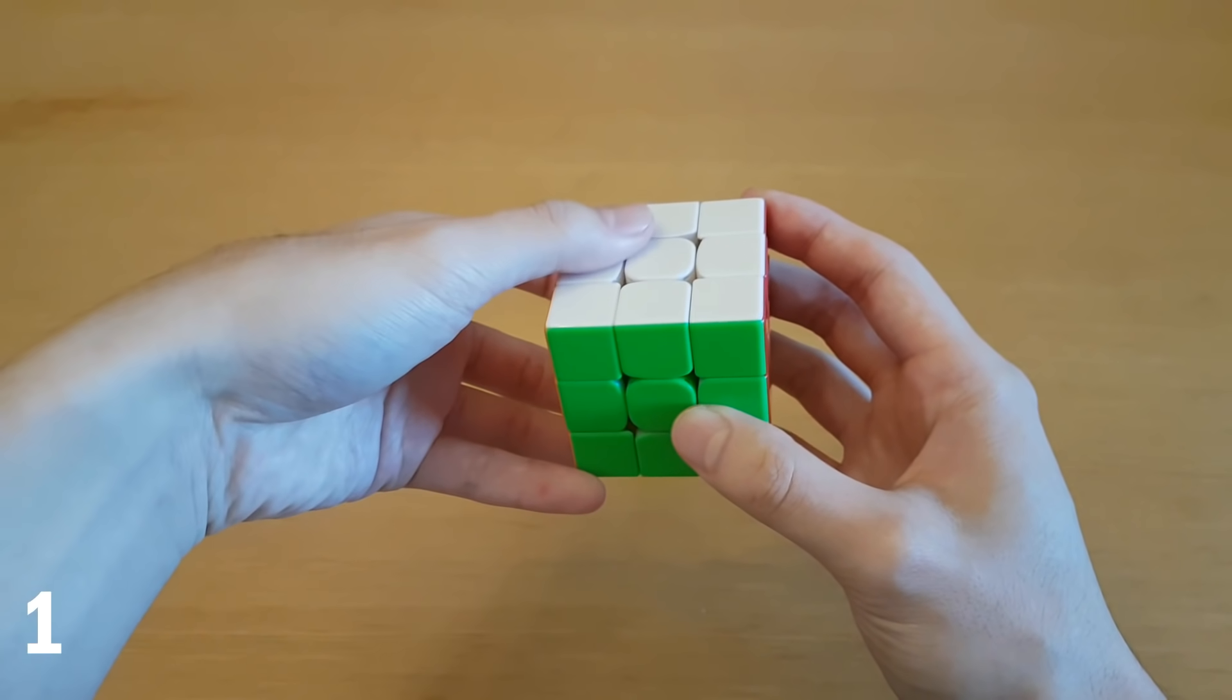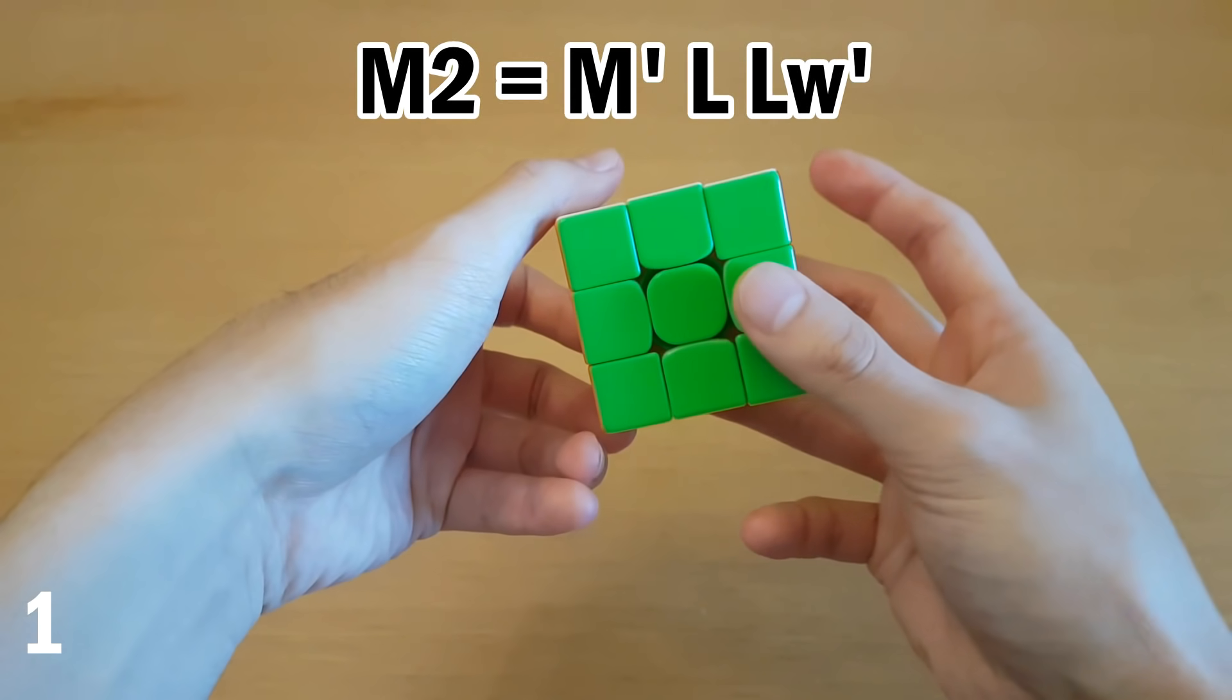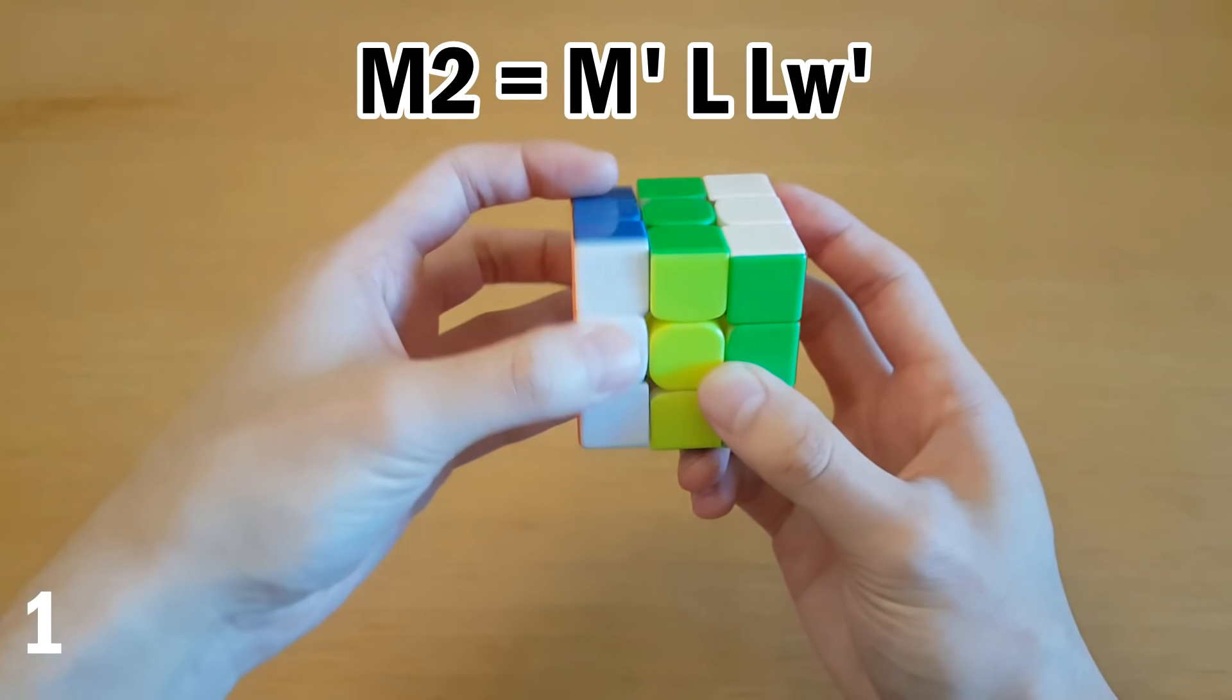Another form of M2 I like to do is when one of my hands is in the top grip, then instead I do M2 like this. Which is M' with the hand that's not in top grip, and then use this hand to go down and up.